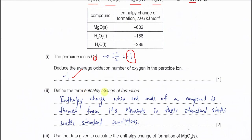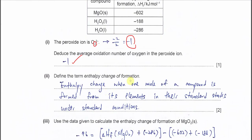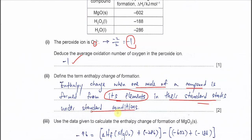Part 2: define the term enthalpy change of formation. It is the enthalpy change when one mole of a compound is formed from its elements in their standard states under standard conditions. Ensure the definition specifies one mole of compound formed from its elements in their standard state.